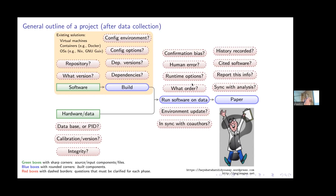There are also runtime options — papers usually say 'we used software XYZ' but don't state the versions, or the order in which those software ran. The environment of your operating system defines the operation of the software. Then there's keeping all this in sync with collaborators. And when writing the paper, can you keep a history? Will you cite the software? As Roberto was saying yesterday, software itself is a research product. But the problem is you only know your top-level dependencies — your top-level science software may have five levels of dependencies underneath, making it hard to track all necessary citations.